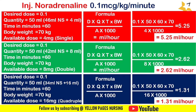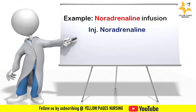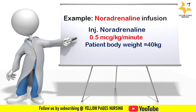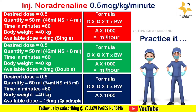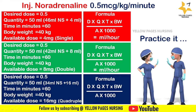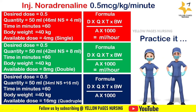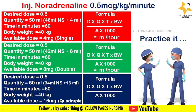Next example is for your practice: order is injection noradrenaline 0.5 mcg/kg/min, patient body weight 40 kg. The data for single, double, and quadruple strength is available — apply it into the formula and mention your answers in the comment box.